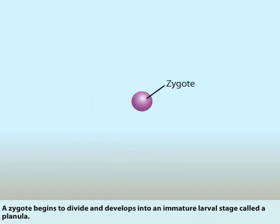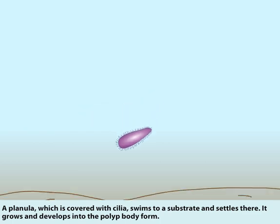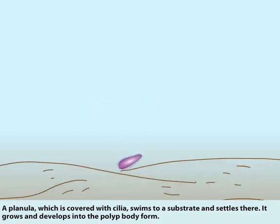A zygote begins to divide and develops into an immature larval stage called a Planula. A Planula, which is covered with cilia, swims to a substrate and settles there. It grows and develops into the polyp body form.